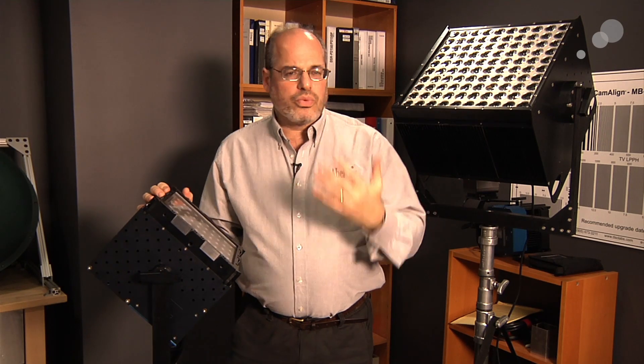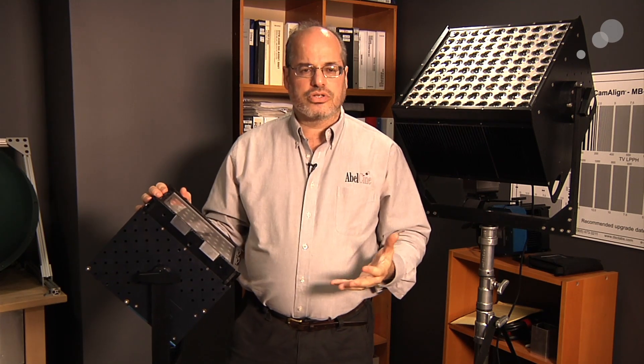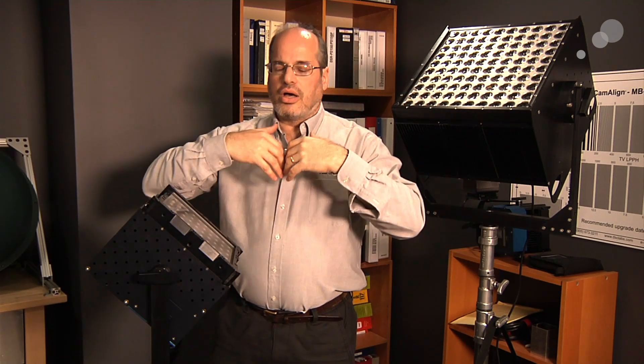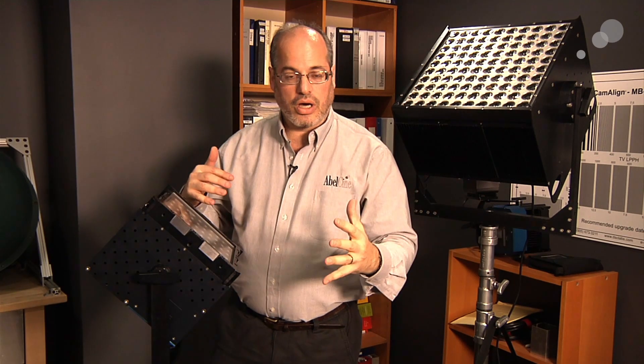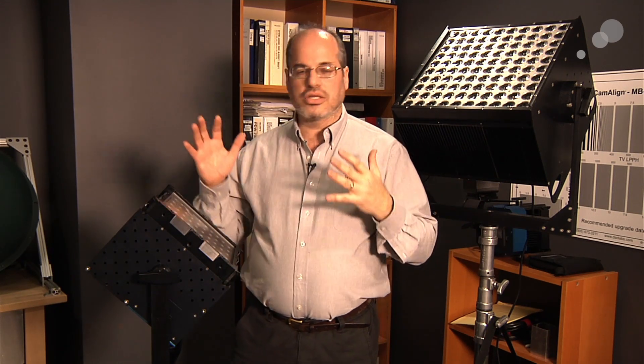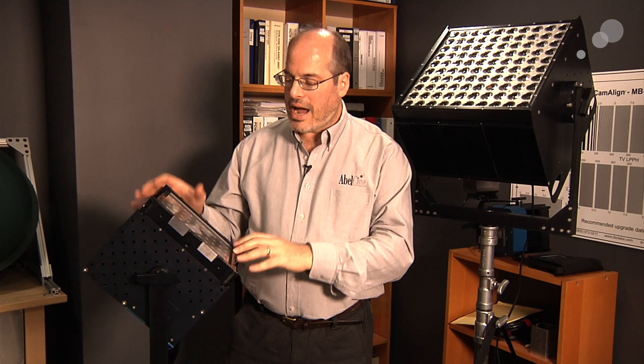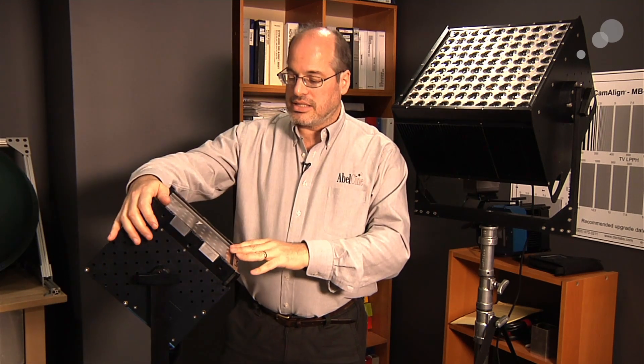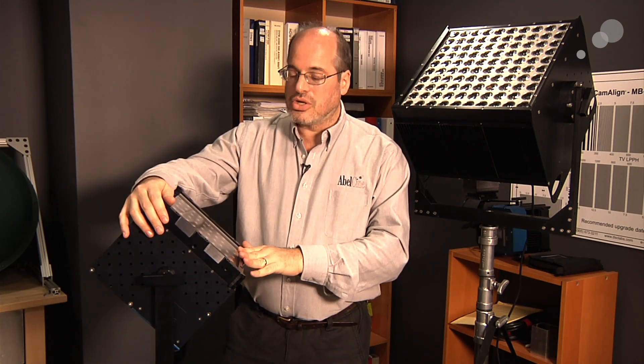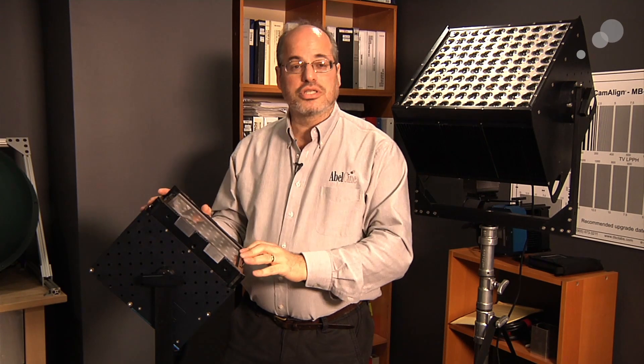But what do we mostly use these kind of light fixtures for? We're bouncing into ceilings or punching through diffusion or blasting through a window. Maybe we put a Chimera on it to get a soft directional light. For that type of use, this is great efficiency, both in power and getting light output. Honestly, it's about half the price of the equivalent HMIs. You're really talking about a pretty smart fixture.